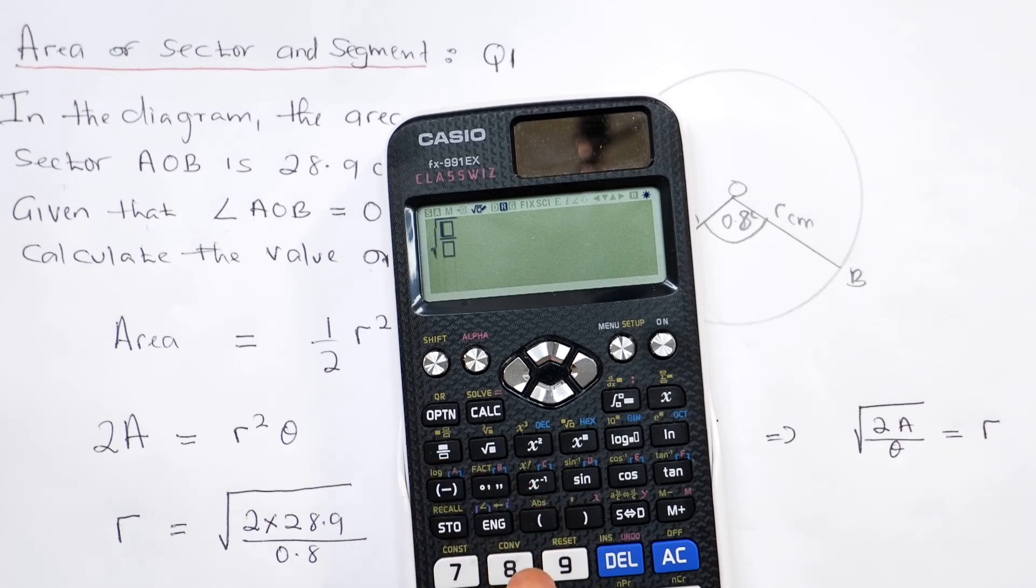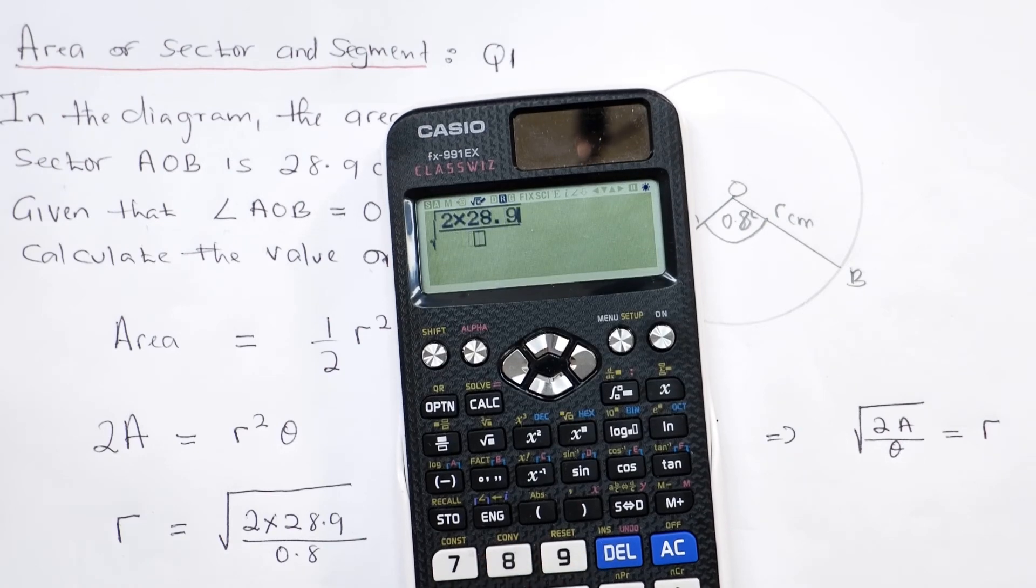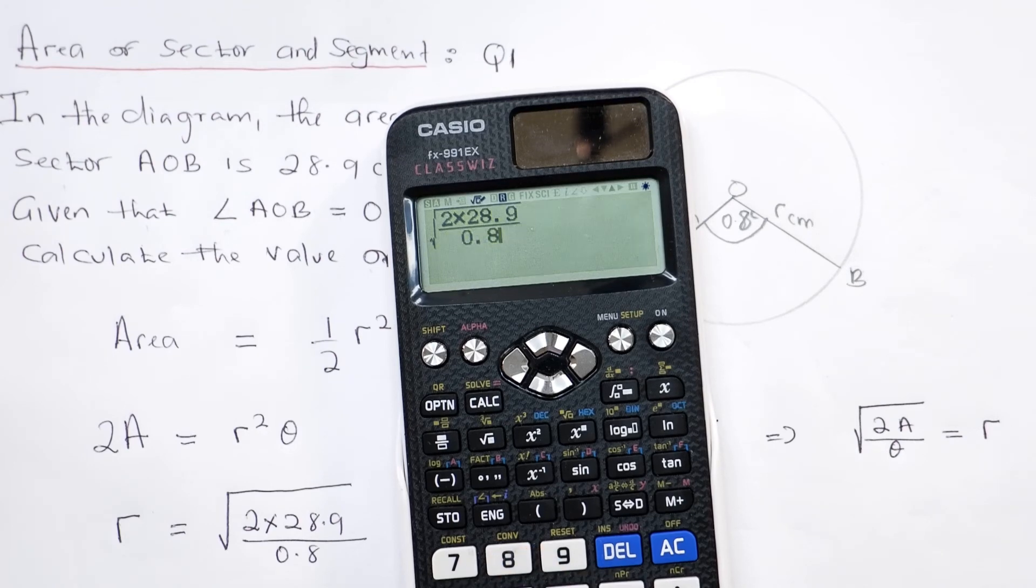Fraction key, 2 times 28.9, arrow key down, divided by 0.8...